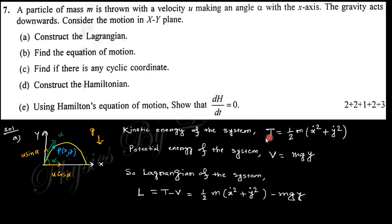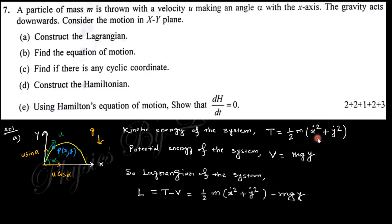The kinetic energy of the system is T = (1/2)m(ẋ² + ẏ²), and the potential energy is V = mgy, where y is the height. Hence the Lagrangian of the system is L = T − V, giving L = (1/2)m(ẋ² + ẏ²) − mgy. Here ẋ is the velocity along the x-axis, ẏ is the velocity along the y-axis, and y is the height.